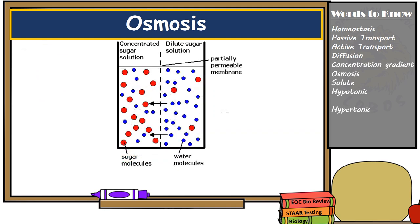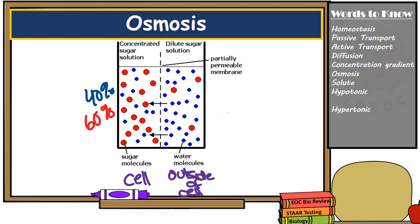Let's look at some examples. The solution on the left — the inside of the cell — has a lot of sugar molecules (red solutes) and very little water (blue molecules), so we estimate about 40% water and 60% solutes. The solution on the right — outside the cell — has very little solutes and more water, about 90% water and 10% solutes. These percentages are estimates to help you visualize whether the water or solute concentration is higher or lower in each solution.